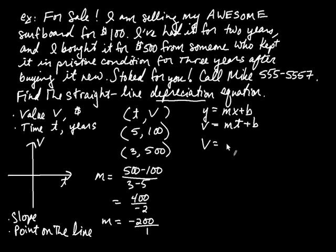So V is equal to negative 200 times T plus the Y-intercept. Now, the Y-intercept has an X-coordinate, or in this case a T-coordinate of zero. Neither of these points are the Y-intercept, but you can get the B by plugging in the coordinates of one of these points. So, for example, if I pick the first point, V is 100 when T is 5.